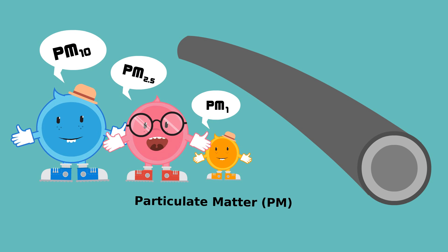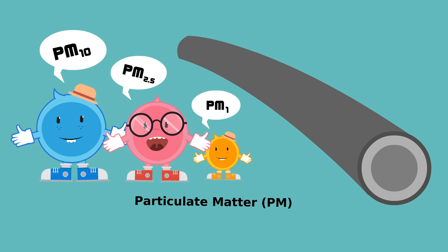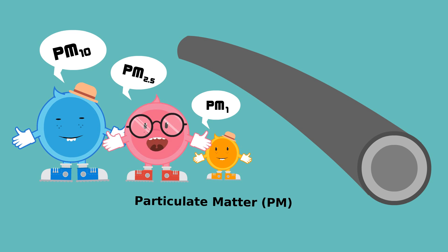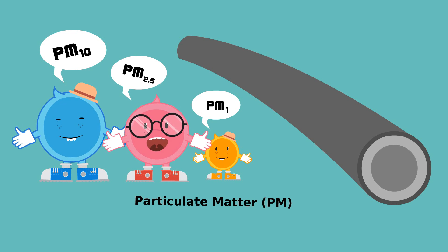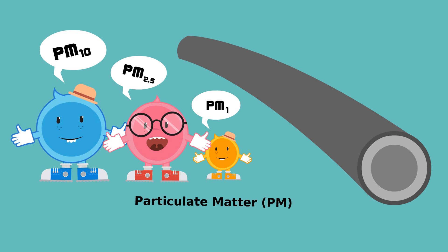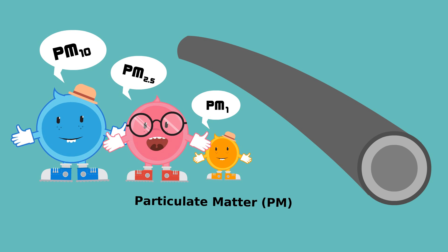People try to classify me by sizing my aerodynamic diameter. PM10 has a diameter of 10 microns. I am PM2.5, 2.5 microns. My younger brother, PM1, is 1 micron.